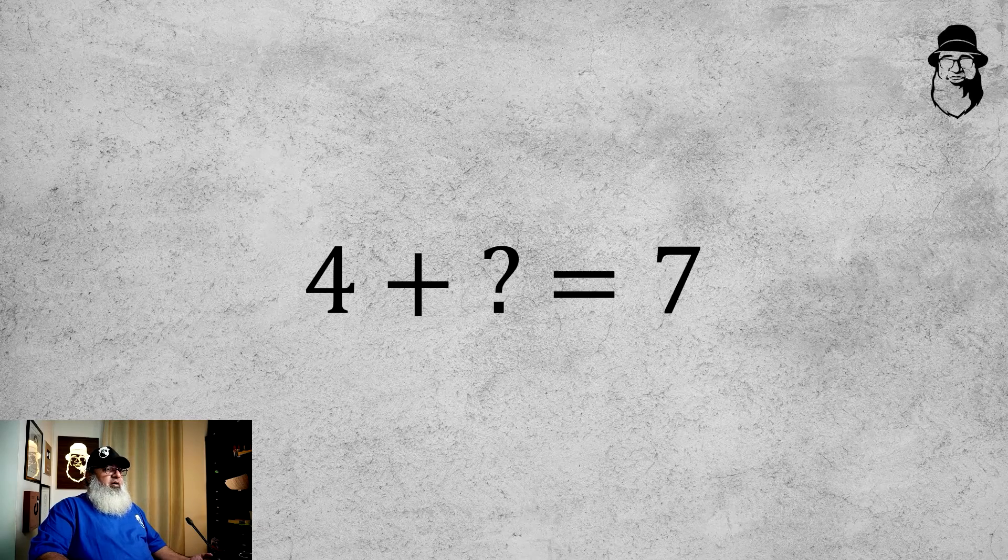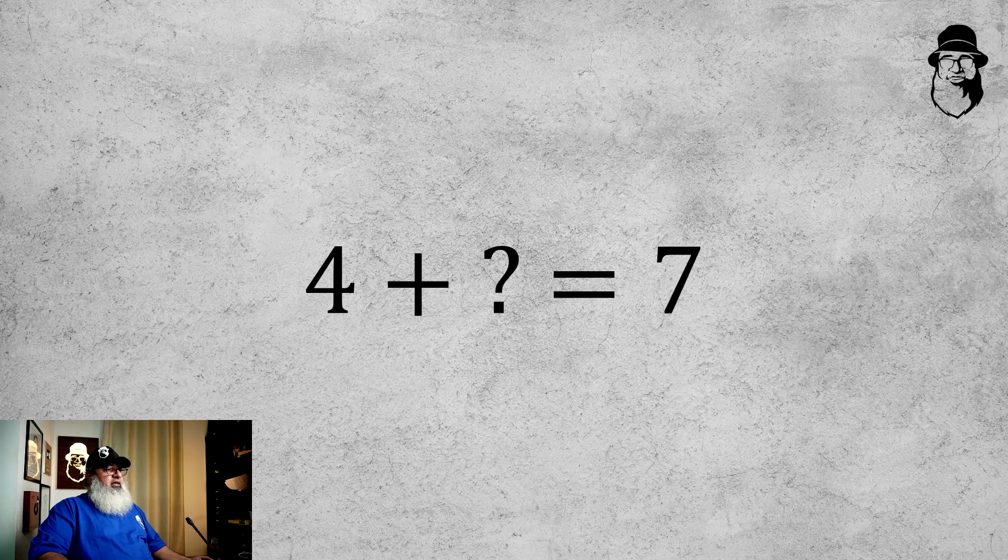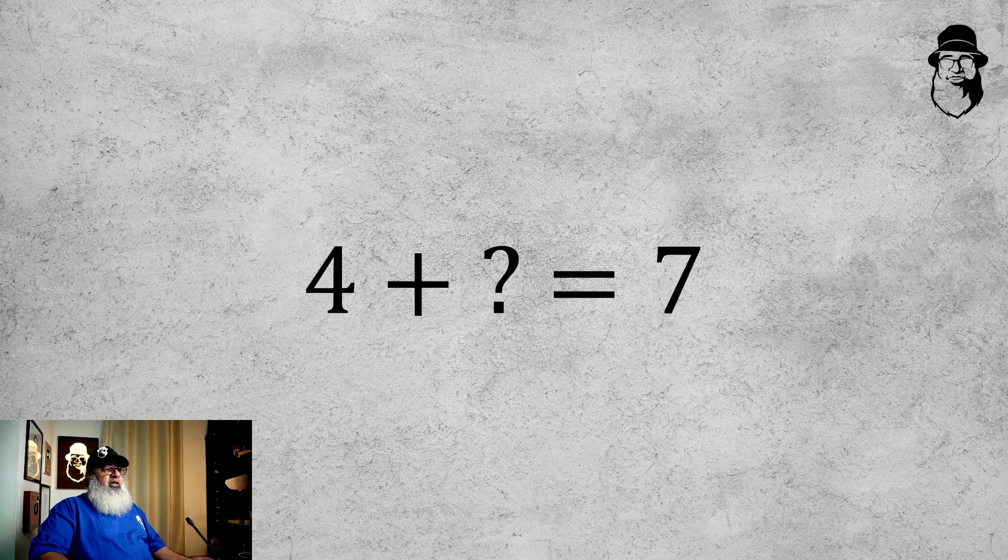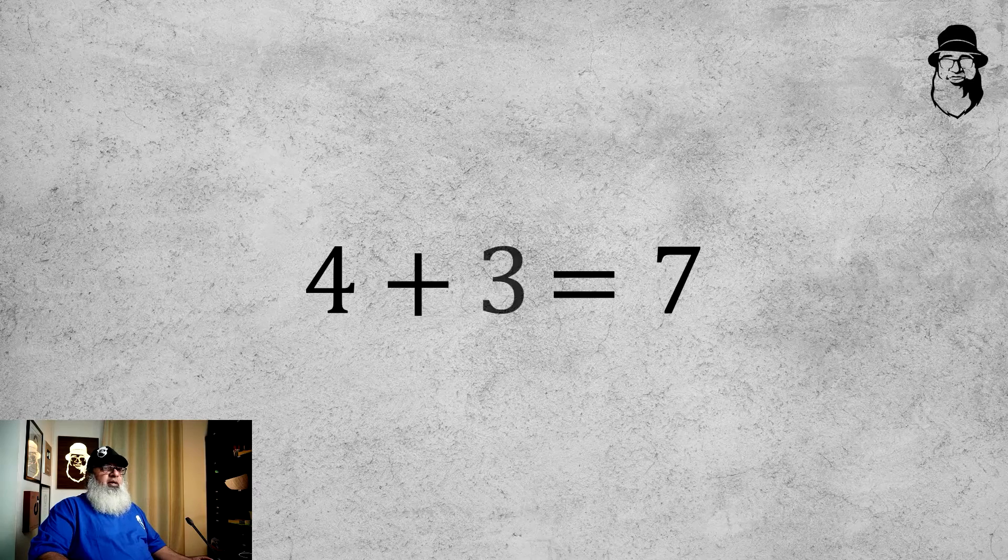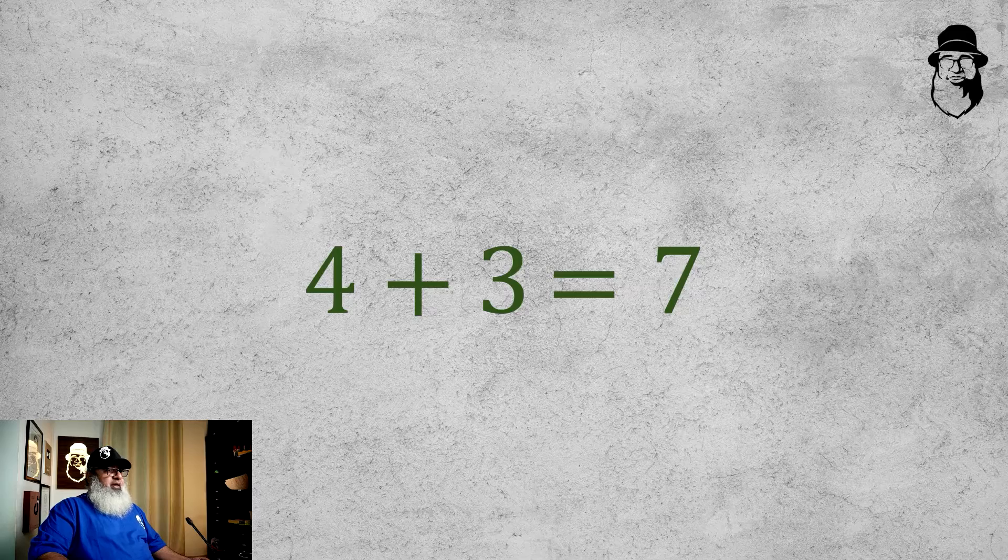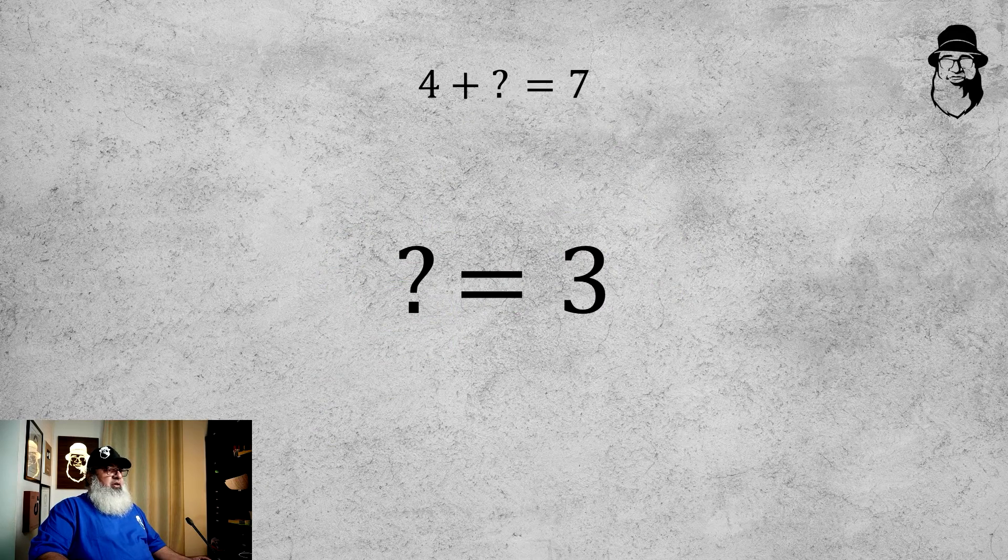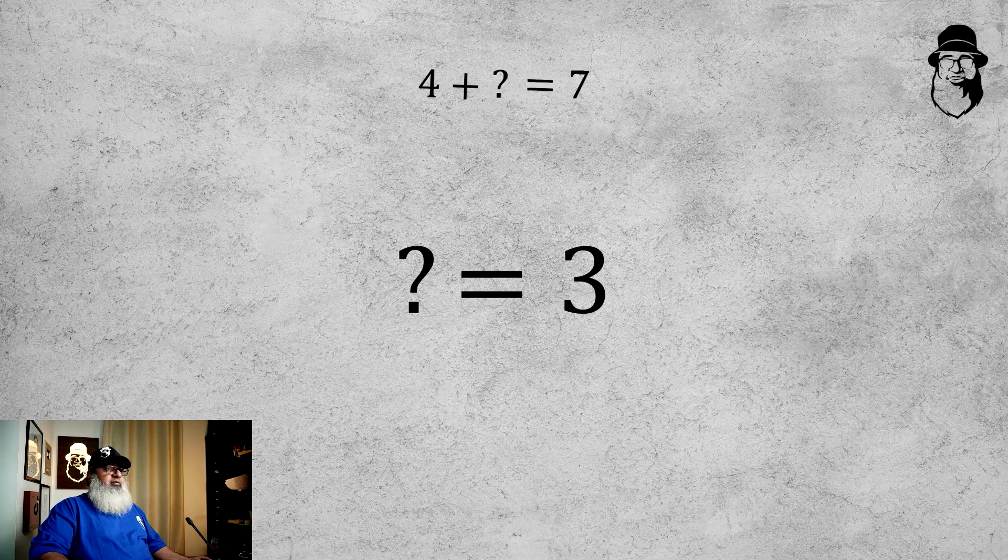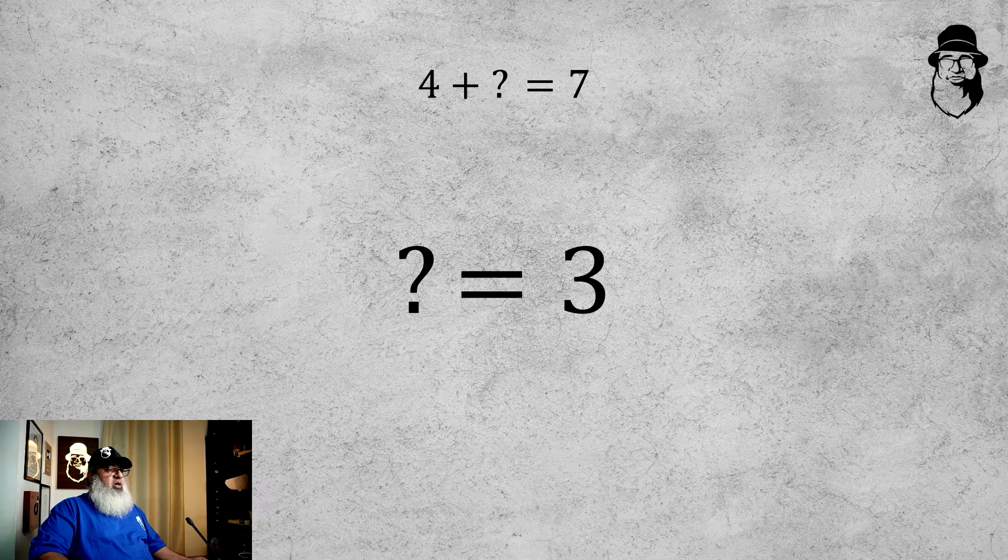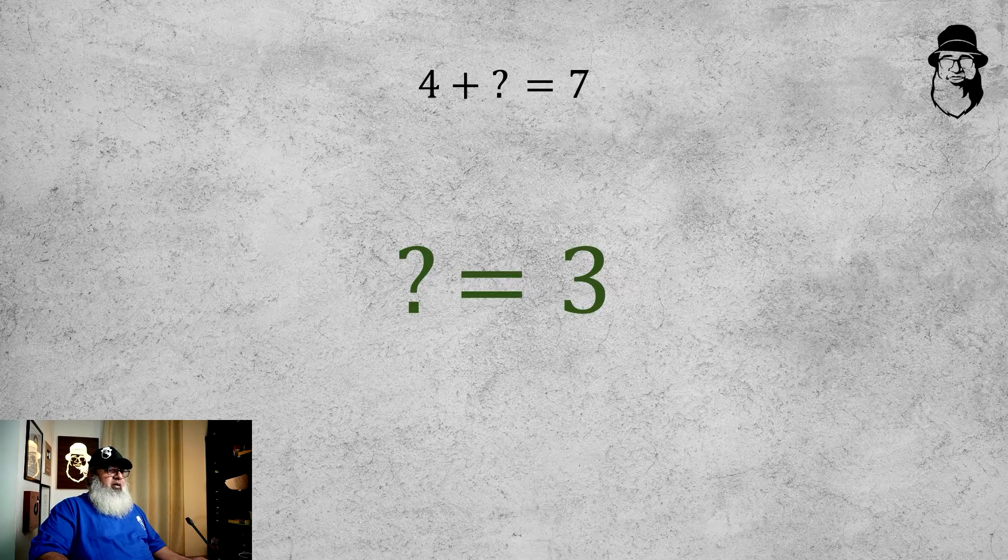Suppose we have 4 plus question mark equals 7. Then this question mark must stand for 3, because 4 plus 3 equals 7, and we say question mark equals 3. We have solved the equation 4 plus question mark equals 7, and the solution or answer is question mark equals 3.